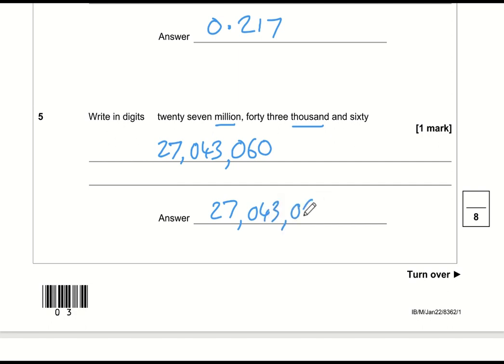After this comma I can't just write 60, it has to be 060. So there we go: 27,043,060. The commas are optional but they do help. This first comma is for thousand, the next comma is for million.